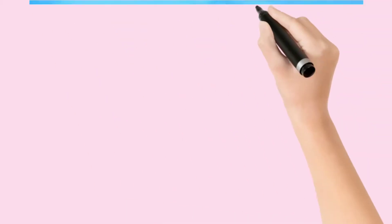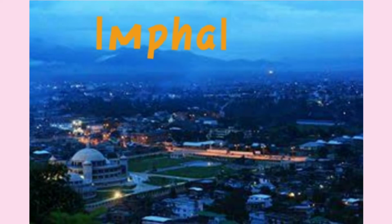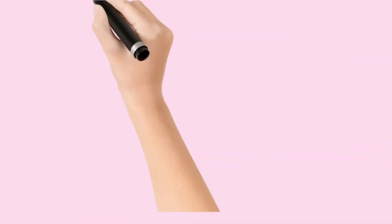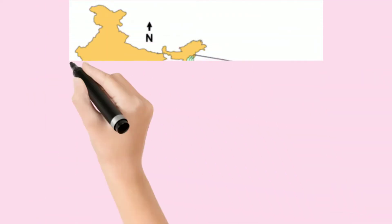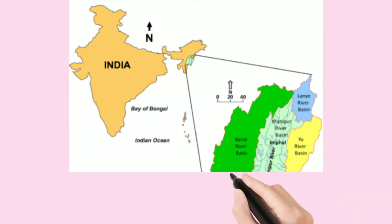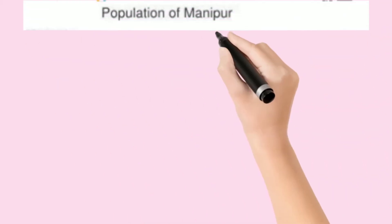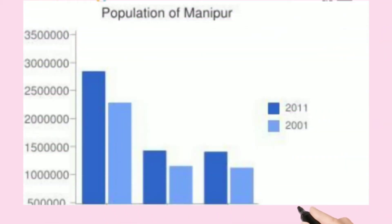Its capital is Imphal. It covers an area of about 22,327 km² and a population of almost 3 million, including the Meitei community male and female.